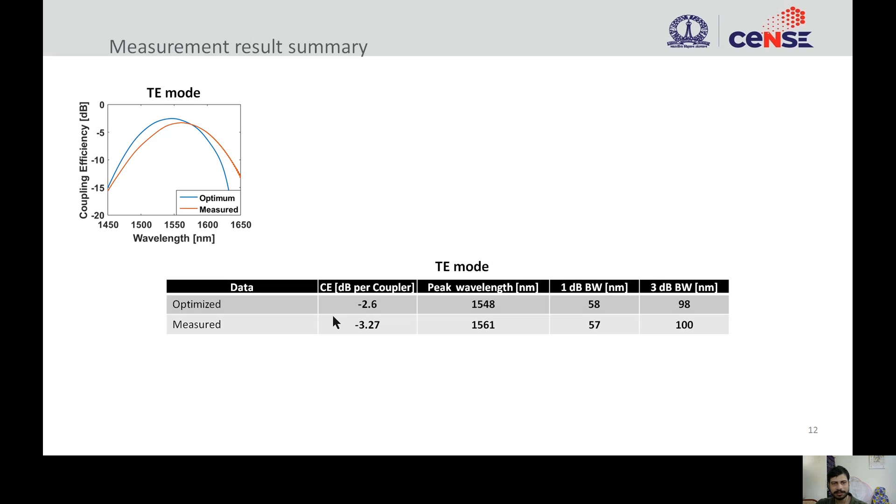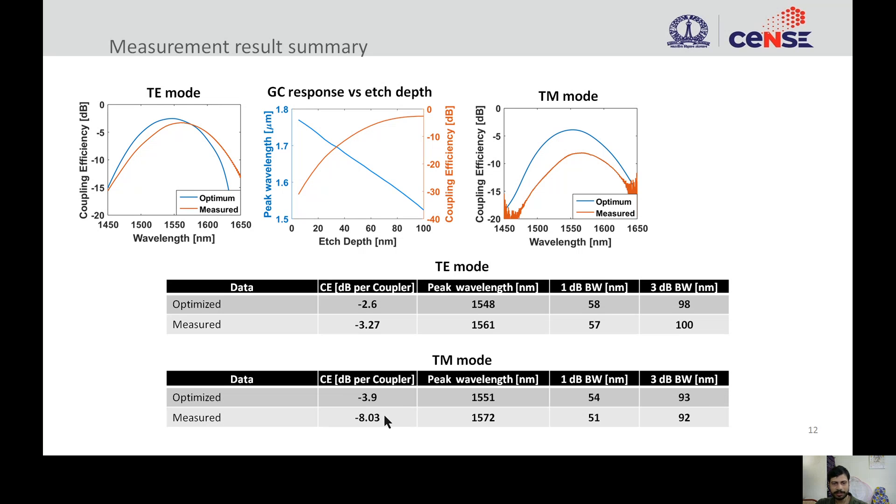After fabrication, we perform measurements on our devices. Here are shown the measurement results. We get a coupling efficiency of minus 3.27 dB per coupler for the TE grating with a 3 dB bandwidth of 100 nanometers. We see a slight red shift in our peak wavelength, and this comes out because of the variation in the etched depth. We have a lower etched depth in our fabricated devices, and it is consistent with our simulation, because a lower etched depth shifts the wavelength into longer wavelengths. For TM mode, the coupling efficiency was found to be 4 dB less than our optimum value, around minus 8 dB per coupler with a 3 dB bandwidth greater than 90 nanometers. This was because the silicon dioxide bottom clad thickness is different from our target value. We expect that as we optimize the silicon dioxide thickness, the coupling efficiency should improve.